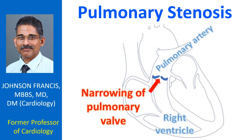Pulmonary stenosis is a congenital narrowing of the pulmonary valve. Severe PS leads to right ventricular hypertrophy and failure. Right ventricular end diastolic pressure elevation leads to elevated right atrial pressure, which stretches open the foramen ovale and causes right-to-left shunting of blood, leading to systemic desaturation.